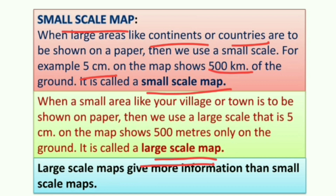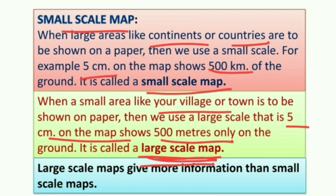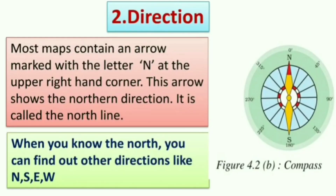When a small area like your village or town is to be shown on paper, we use a large scale map. Here, 500 meters on the ground is shown as 5 centimeters on the map — this is called a large scale map. We can conclude that the large scale map gives more information than the small scale map, because in a large scale map every minor detail is clearly identified and mentioned.